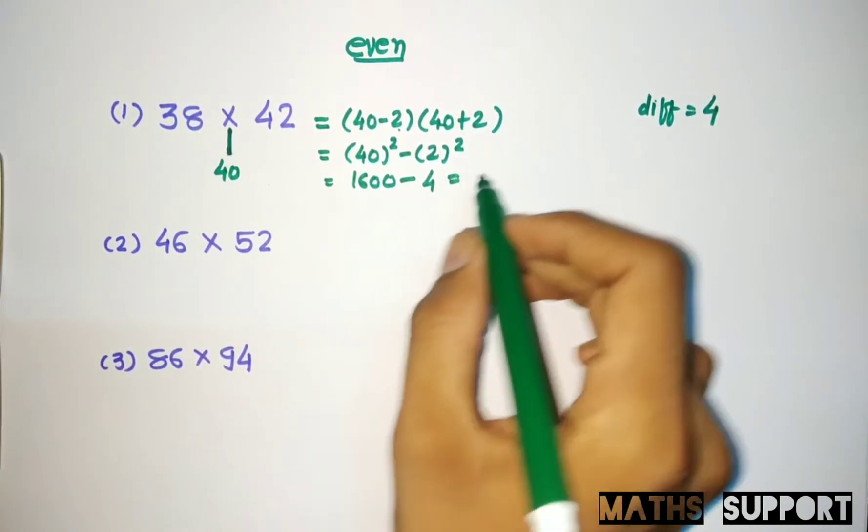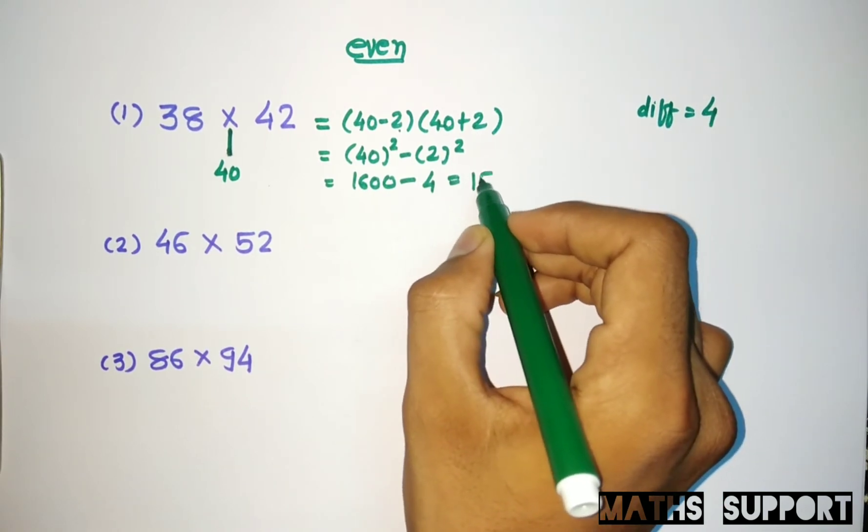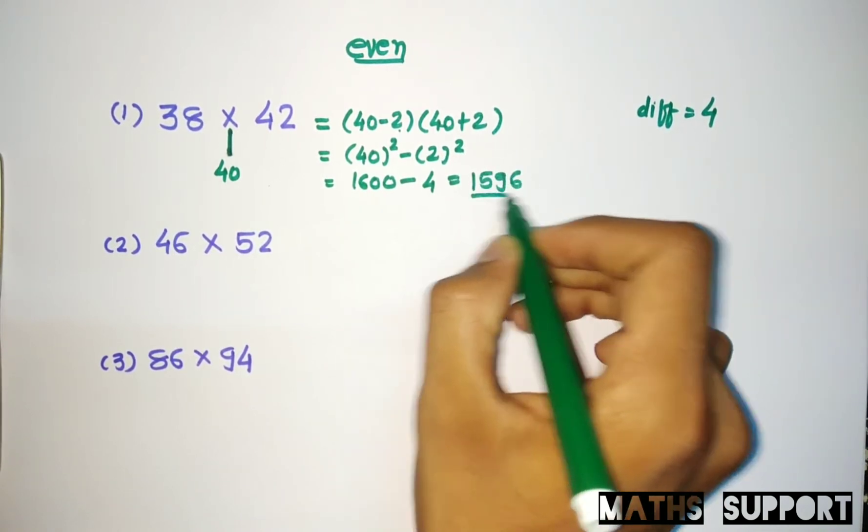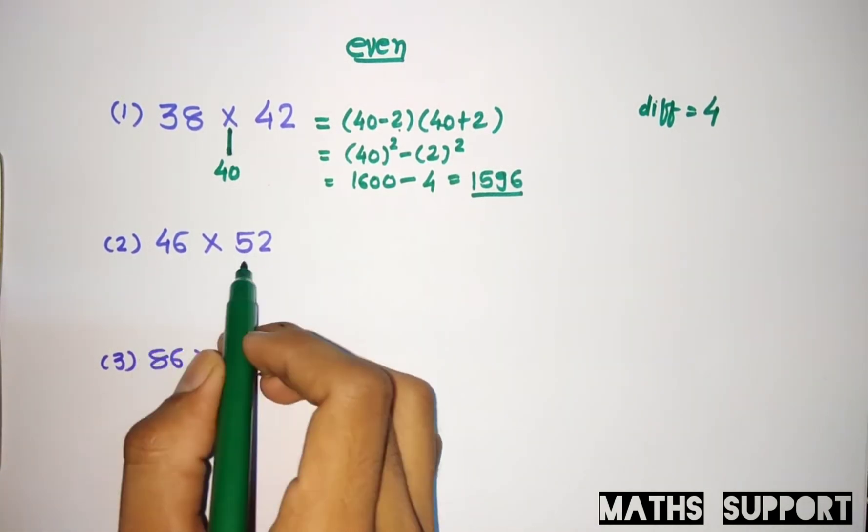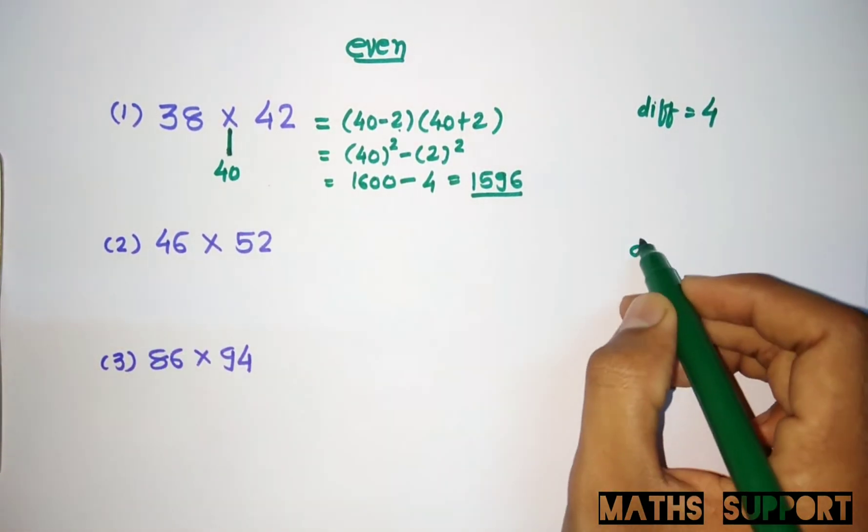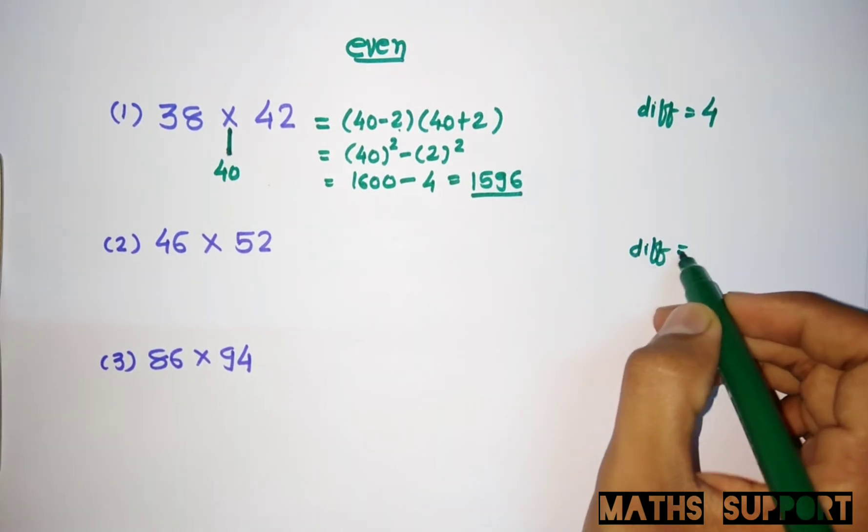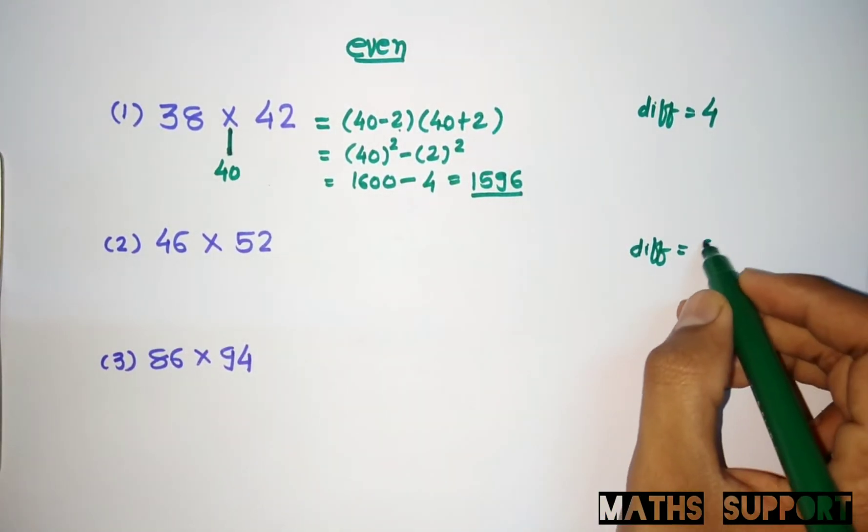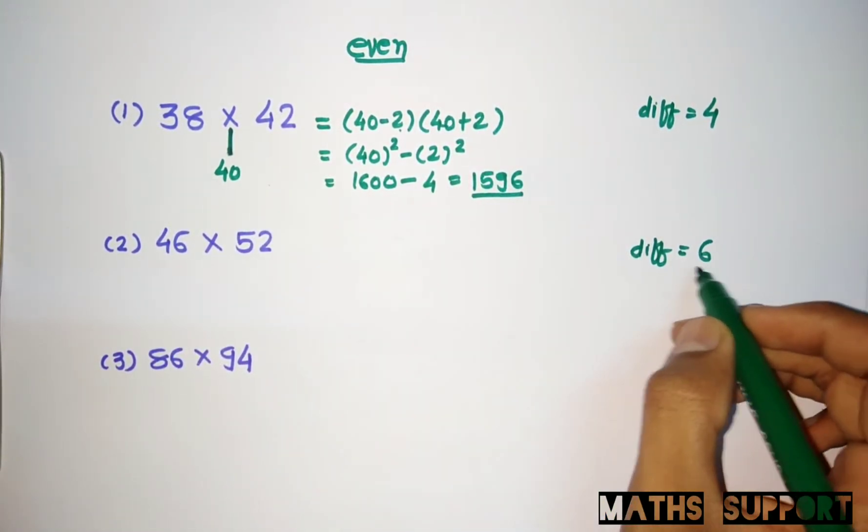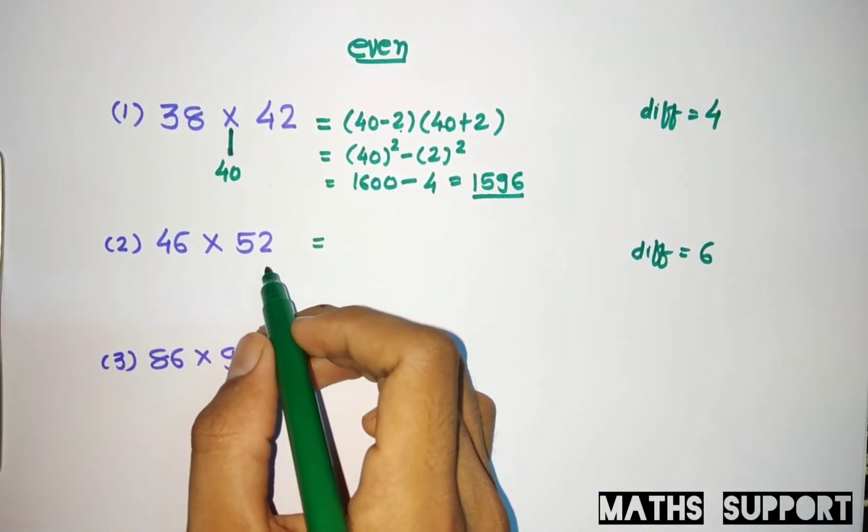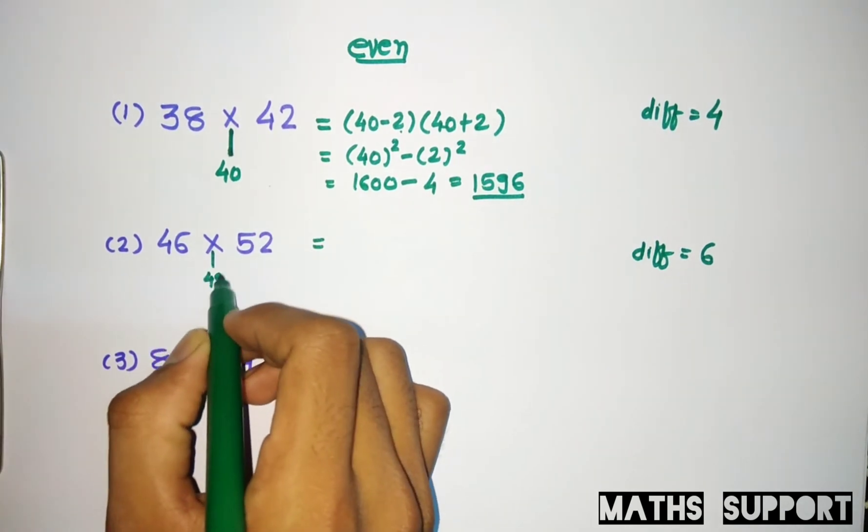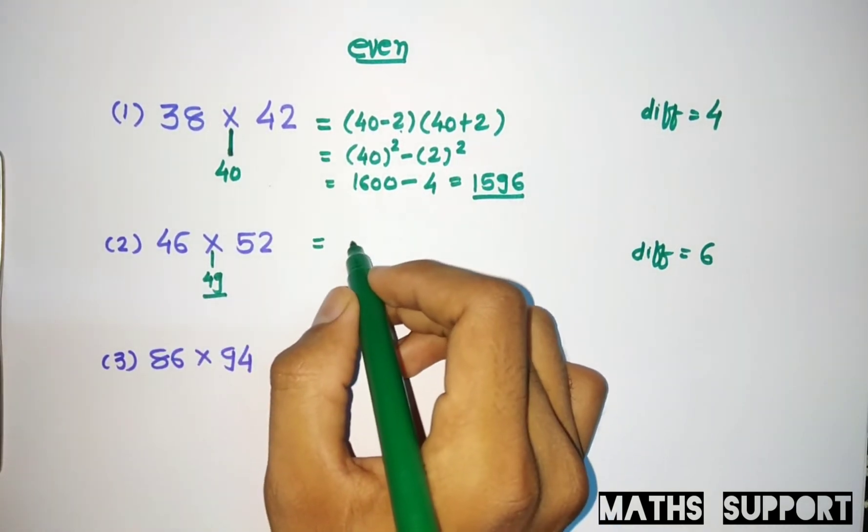Similarly here, the difference is 52 minus 46, that is 6. By dividing it by 2 you get 3. If you add 3, you are getting the mid value that is 49. So you can simply write this number as 49 minus 3 and 49 plus 3.